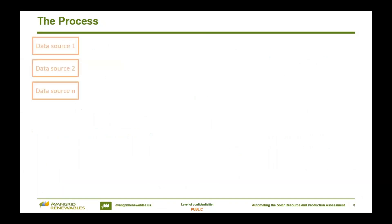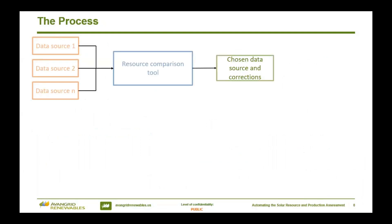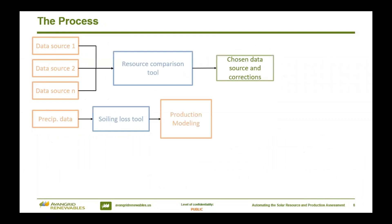So this is what my process currently looks like. I pull my data sources — these are in orange because I'm using an API to call them. Most of the satellite data sources the industry is currently using already have API access, from open source ones like NSRDB to the pay-for-play ones, Solar GIS or Solargis. I download these and run them through that resource comparison tool, then output my chosen data source and any corrections I want to apply. Now I'm ready to start looking at production, but that involves those loss factors. So I pull some precipitation data — orange again because I make another API call — both NOAA and PRISM are API accessible. I run that through my soiling loss tool, and now I'm starting to think about string sizing. But I need production for that, so I pull an API, run that through my production modeling, and I'm able to get to my string sizing tool inputs.